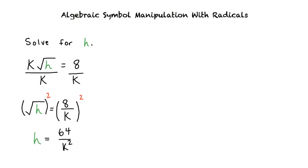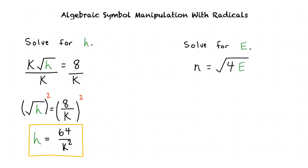Now we have found that h is equal to 64 over k squared. Let's take a look at one more example problem. We are given n equals the square root of 4e, and we are asked to solve for the variable e.